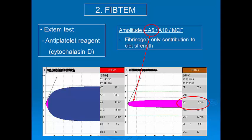The FibTEM is possibly the most useful test in clinical practice, as fibrinogen deficiency is the most common disorder to occur in major haemorrhage. In essence, the FibTEM is an EXTEM test to which an antiplatelet agent known as cytochalasin D has also been added. This allows us to specifically identify the fibrinogen-only contribution to clot strength.